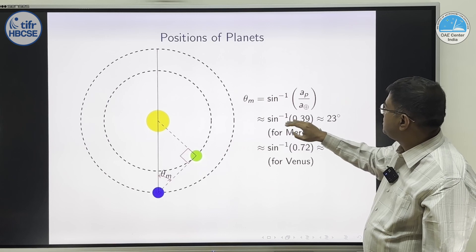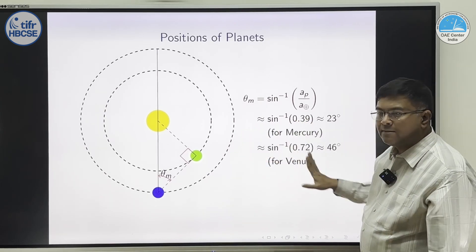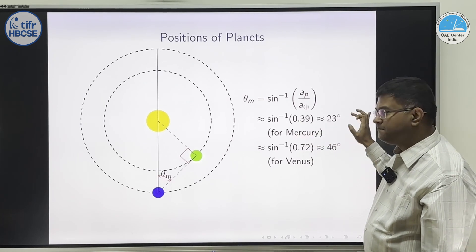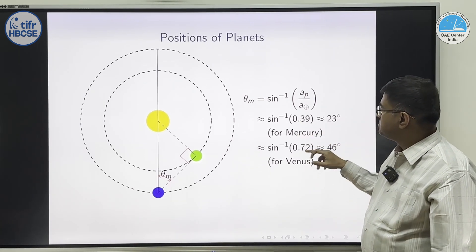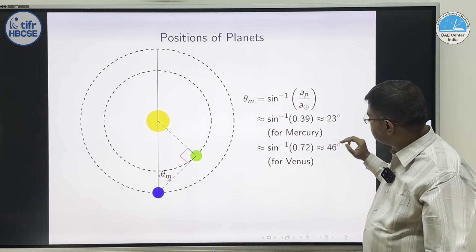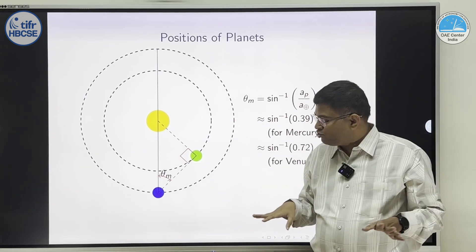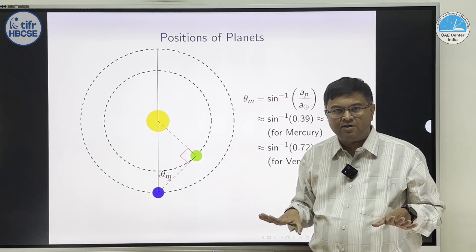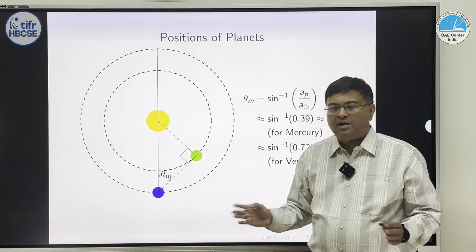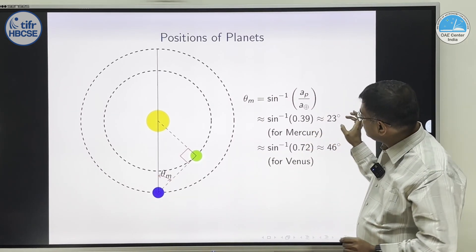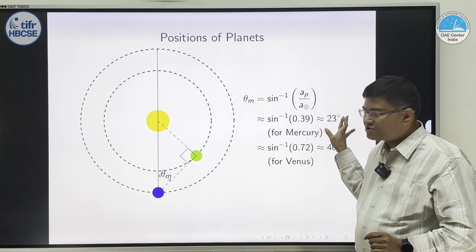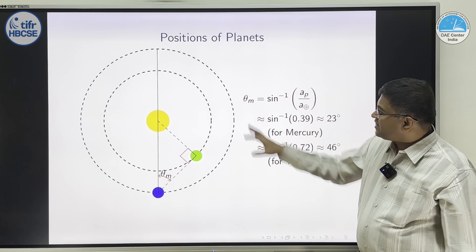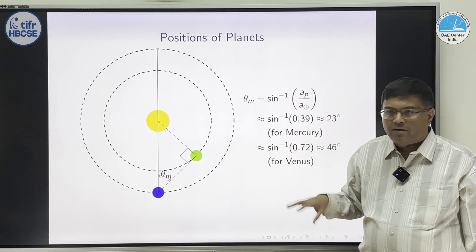Suppose for Mercury, you take approximately the orbit radius is 0.39 AU, you put that, you get 23 degrees. For Venus, it is about 0.72 AU, you get about 46 degrees. Here, we are assuming all orbits are in the same plane, and all orbits are circular. This is an approximation. Actually, for Mercury, it is about 28 degrees maximum elongation, and for Venus, it is about 49 degrees maximum elongation. But, this already gives you a first order calculation.